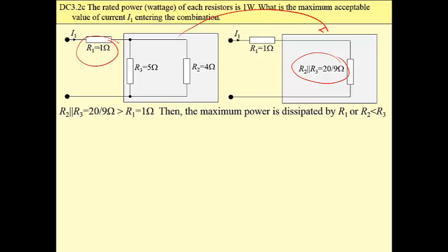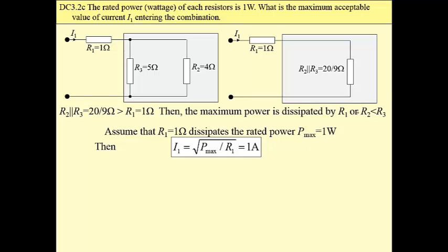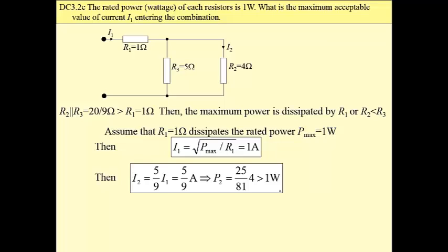which means that at this moment we don't know whether R sub 1 or R sub 2 dissipates more power. The maximum power is dissipated by R sub 1 or by R sub 2. So let me assume at first that R sub 1 dissipates the maximum power in this combination, dissipates the rated power of 1 watt, and then we can find the current that enters the combination. The next step is to check whether power dissipated by R sub 2 is less or greater than 1 watt.